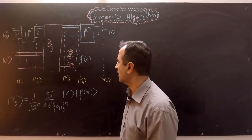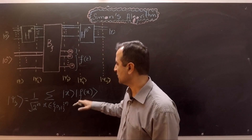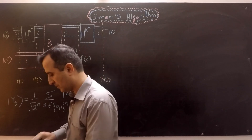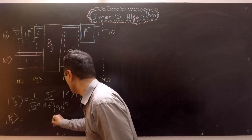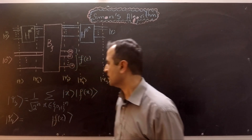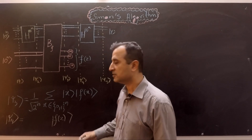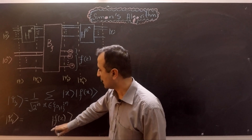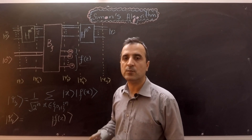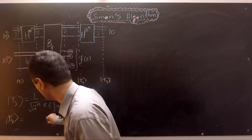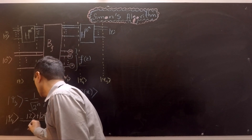We measure the second register, and our measurement reveals the second register has a value of f(x). After measurement, the second register will no longer be in superposition but will have a pure state of f(x). So in |ψ4⟩ the second register is in a pure state. After measurement, the content of the first register will also change — the first register will no longer have a superposition of all possible inputs. Instead, it will have a superposition of the inputs that can produce that f value. Since f is a 2-to-1 function, the first register will have an equal superposition of the two inputs z and z ⊕ s.